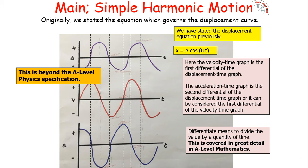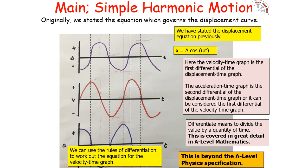Differentiation means dividing a value by the quantity of time. The first differential means we divide the original value by time — for example, displacement divided by time gives velocity. Then velocity divided by time gives acceleration. This is why the acceleration-time graph is the differential of the velocity-time graph. Note: you do not need to know this for A-level physics, but it provides a nice link between physics and A-level mathematics.